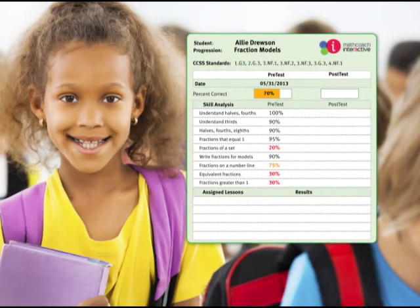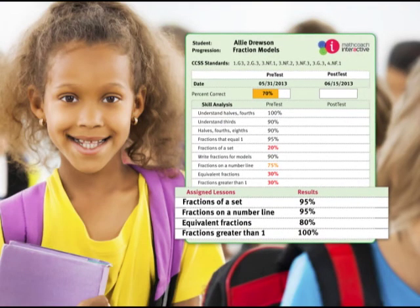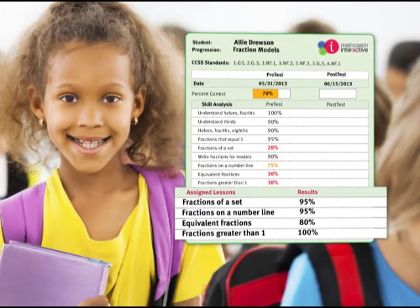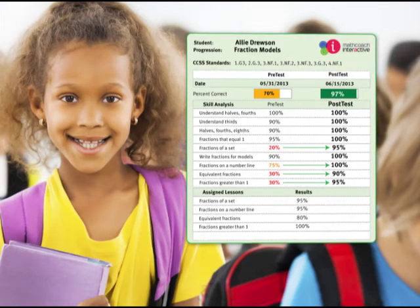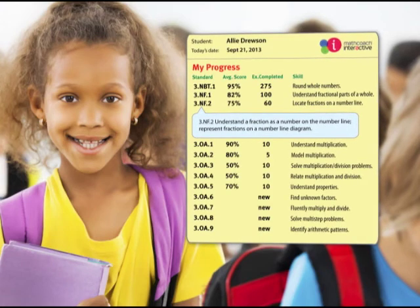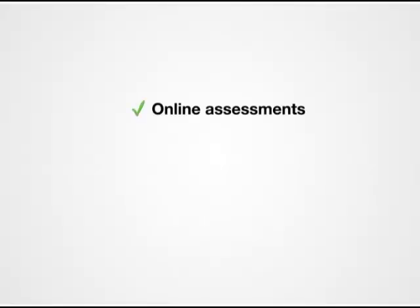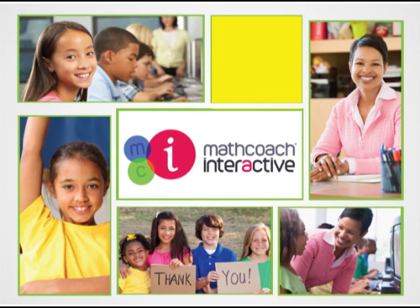Formative assessment data are reported as a global score and by sub-skill to identify hidden learning gaps. As students complete the lessons on their individualized learning paths, their progress is recorded skill-by-skill. Summative assessments recheck all sub-skills to show growth and verify skills maintenance. Cumulative reports show overall progress toward mastery of Common Core standards for each student. Online assessments, tailored instruction, engaging practice, robust reporting — let MathCoach Interactive be your partner to teach the Common Core.